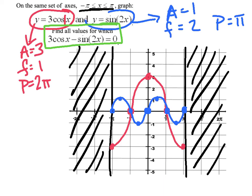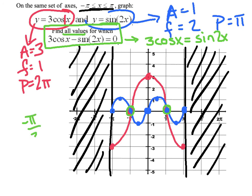Here's the key part B question: find all values for which 3cos(x) minus sin(2x) equals zero. Rewrite it as: when does 3cos(x) equal sin(2x)? Now they're not just asking how many intersections — they want the actual values. There are two intersections, and I need to identify their exact values. The solution set is x = negative π/2 and x = positive π/2.